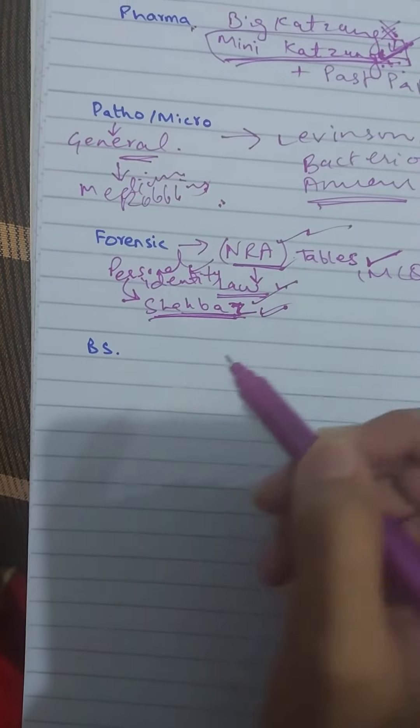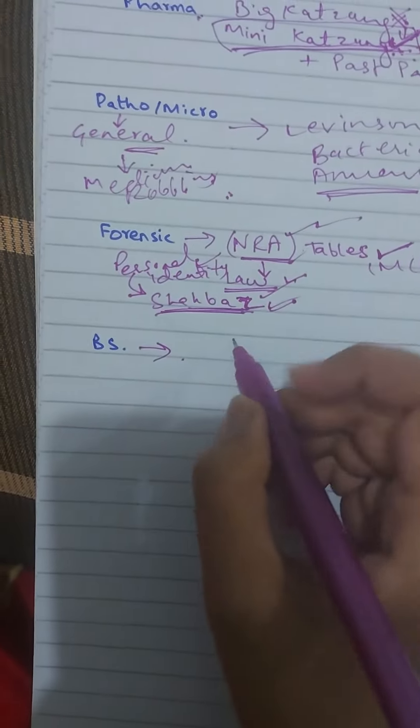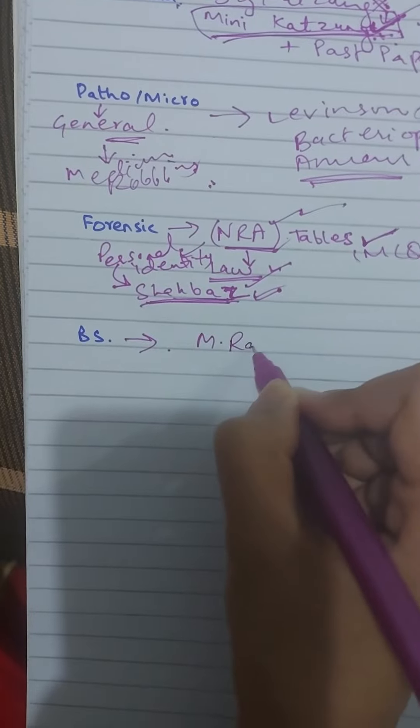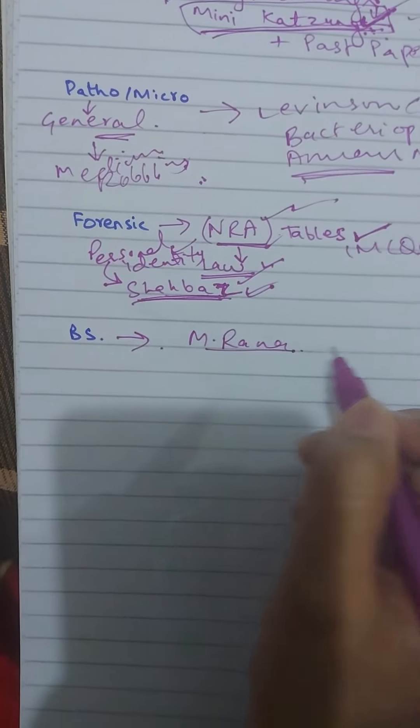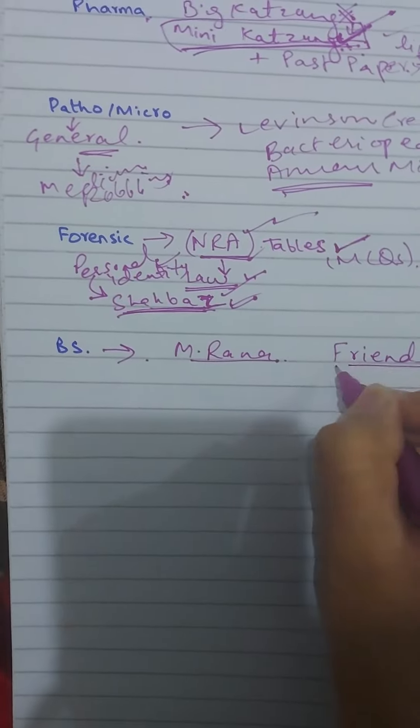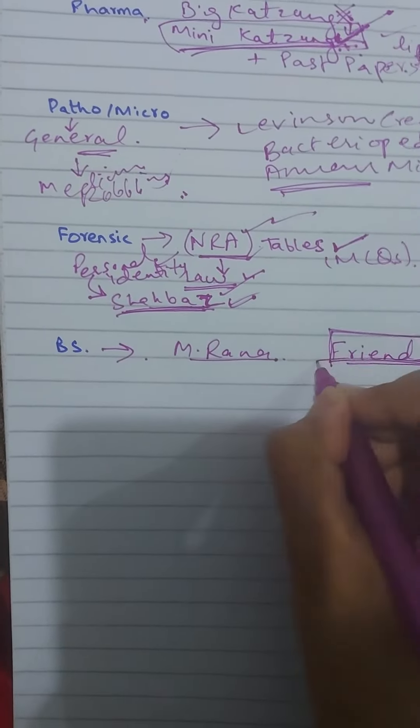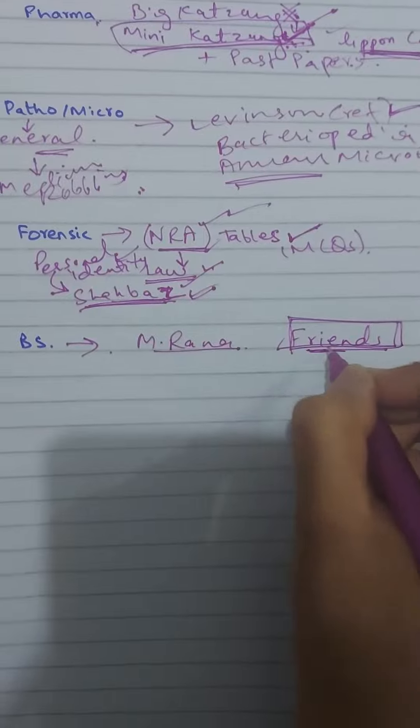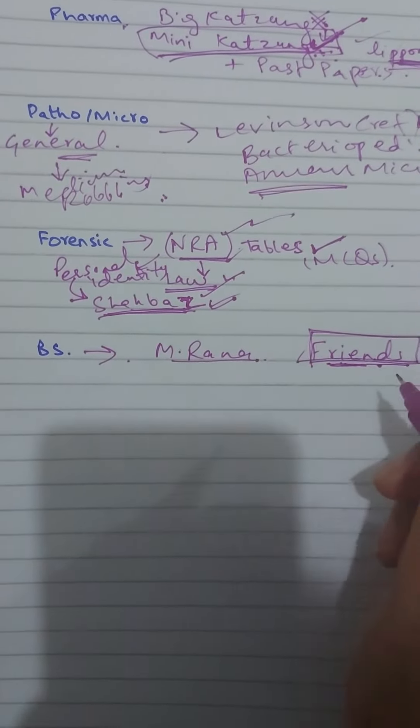So go for NRA and Shabazz. If I talk about BS, there is a main book called Maudadrana. Maudadrana is reading, but I have read a book that is Friends. Friends is a short book and I have read a lot of children's distinctions. They are MCQs and they come to UHS.